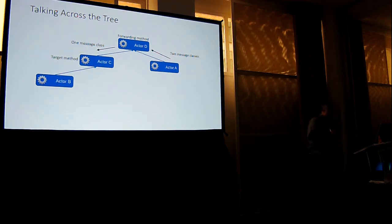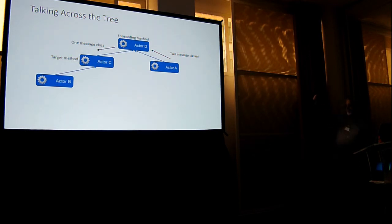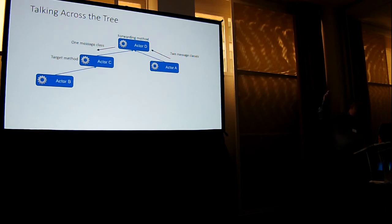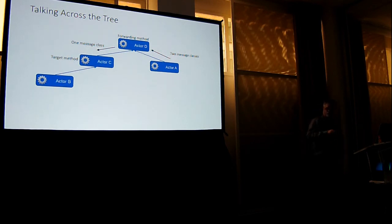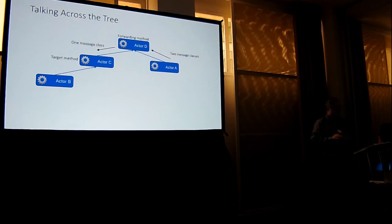Going back to our hierarchy: talking across the tree. I need data from actor A to get to actor C. If you're adhering to the tree, you need an abstract message from A to D, a concrete message at D that invokes a forwarding method which calls a message of C, and invokes a target method on C. After you do this three or four times, you get really tired of routing stuff across the top. There's no performance reason not to run it through D — you're talking about a few milliseconds extra. But your user experience starts to suffer.